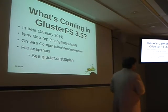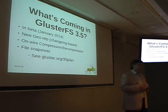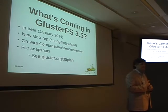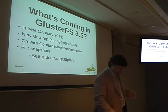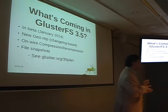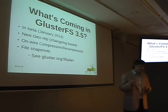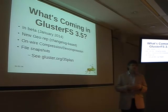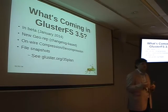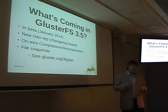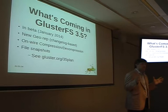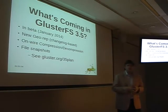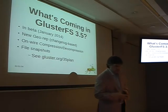Currently in beta, we have GlusterFS 3.5. We just released beta 2 earlier this week, so I recommend everyone try it now. One of the key features is the newly rewritten geo-replication module. It uses a changelog-based replication. Everything we're doing for replication is moving to a changelog-based model, which will eventually allow us to do ordered replication. In order to do things like file versioning and volume-level snapshots, the changelog-based replication will be a great help.